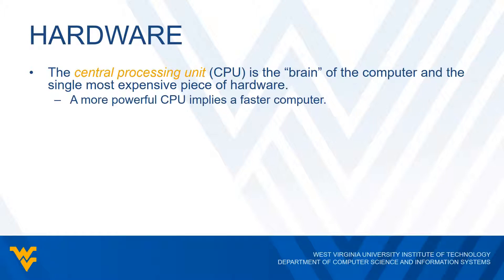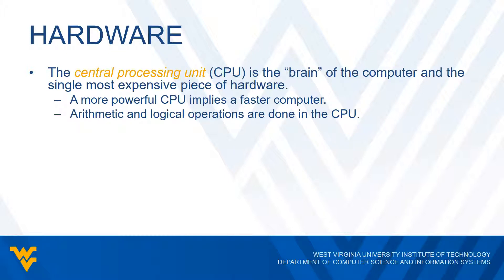A more powerful CPU simply means we have a faster computer. Nowadays we're getting dual core, quad core, and even octa core type CPUs, which become more powerful and allow us to do more instructions very quickly, making things run faster. If some of you are interested in gaming, you've probably looked into more powerful CPUs in order for your games to run faster and be more efficient. This is where all of our arithmetic and logical operations are performed — all the work in our machine is done in the CPU.